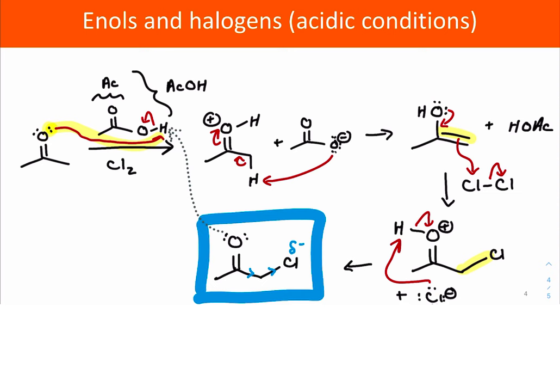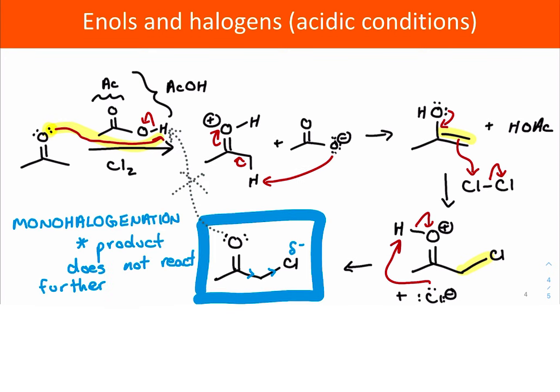it's going to be more of the molecules of the original starting ketone that have enough energy to overcome the activation barrier and get protonated. This is a good thing in this reaction because it means that as acetic acid is colliding and reacting, it keeps reacting with starting material, it keeps generating product, and we don't need to worry about the product reacting further. So important here we get monohalogenation.